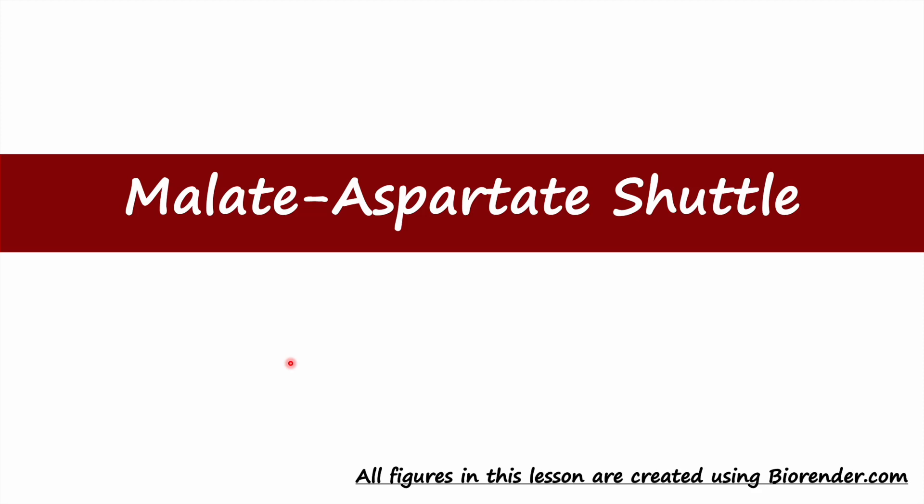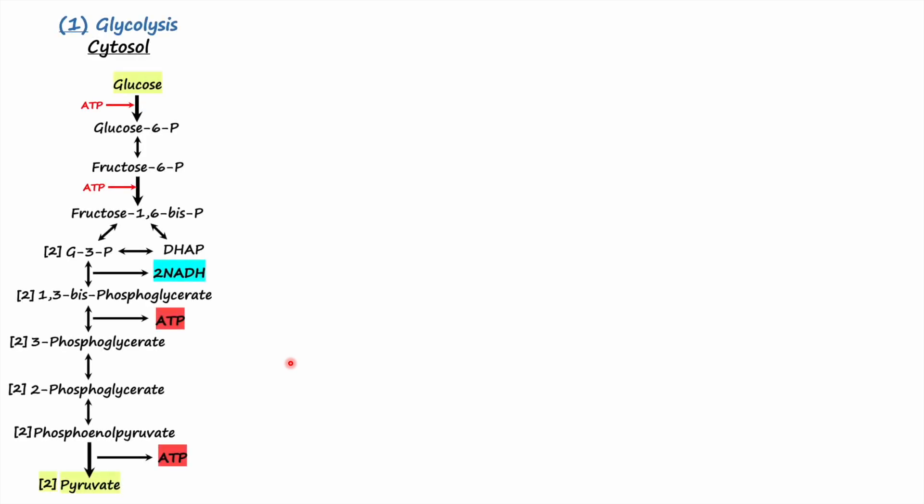Hey everyone, in this lesson we are going to talk about the malate-aspartate shuttle. To start with the background, I first want to talk about cellular respiration. When it comes to glycolysis, cellular respiration is broken down into four different stages.